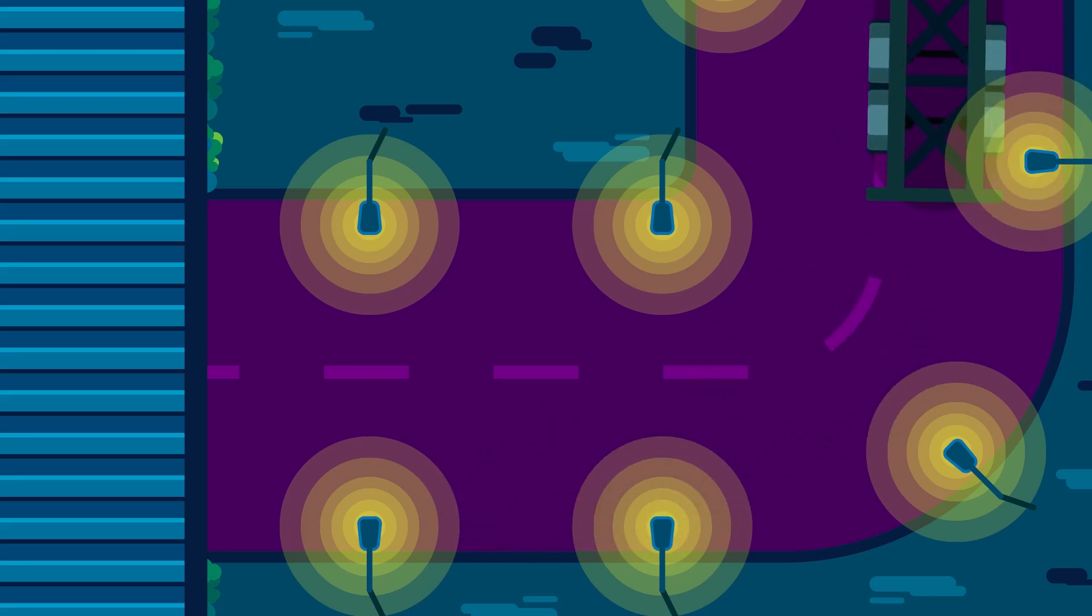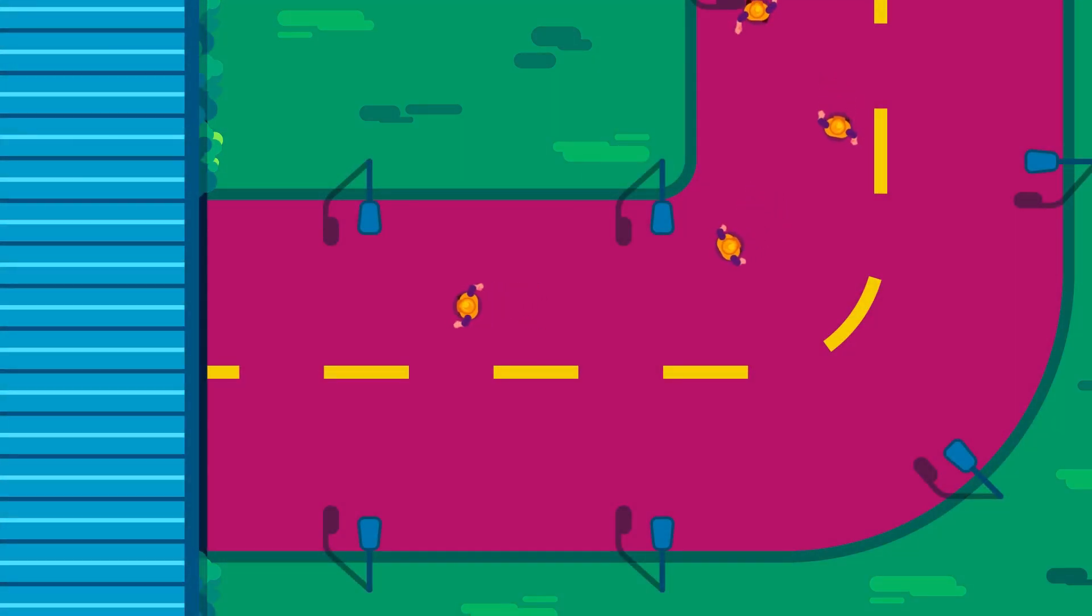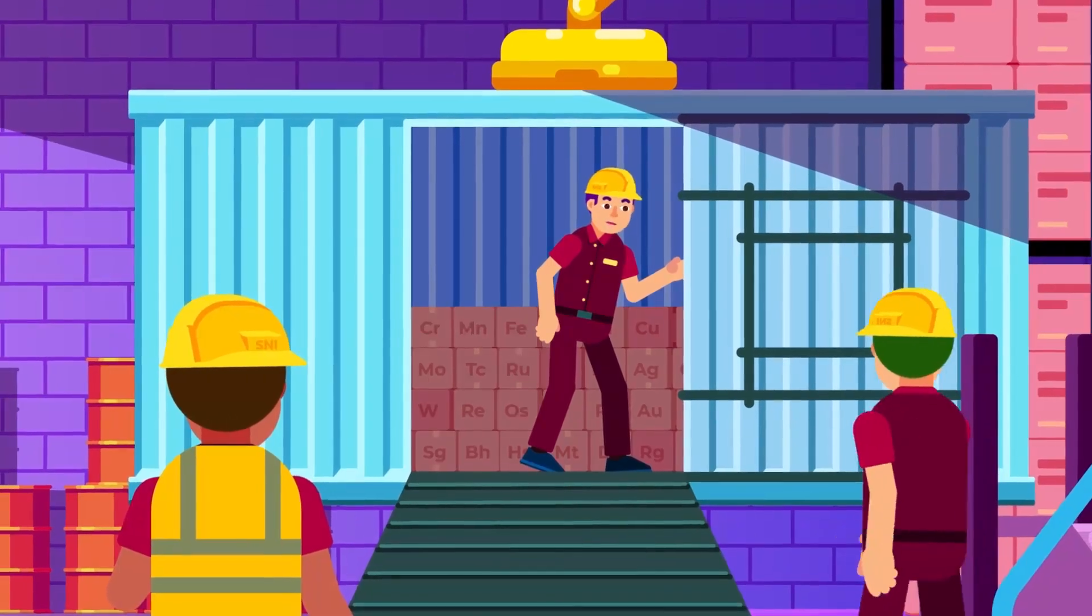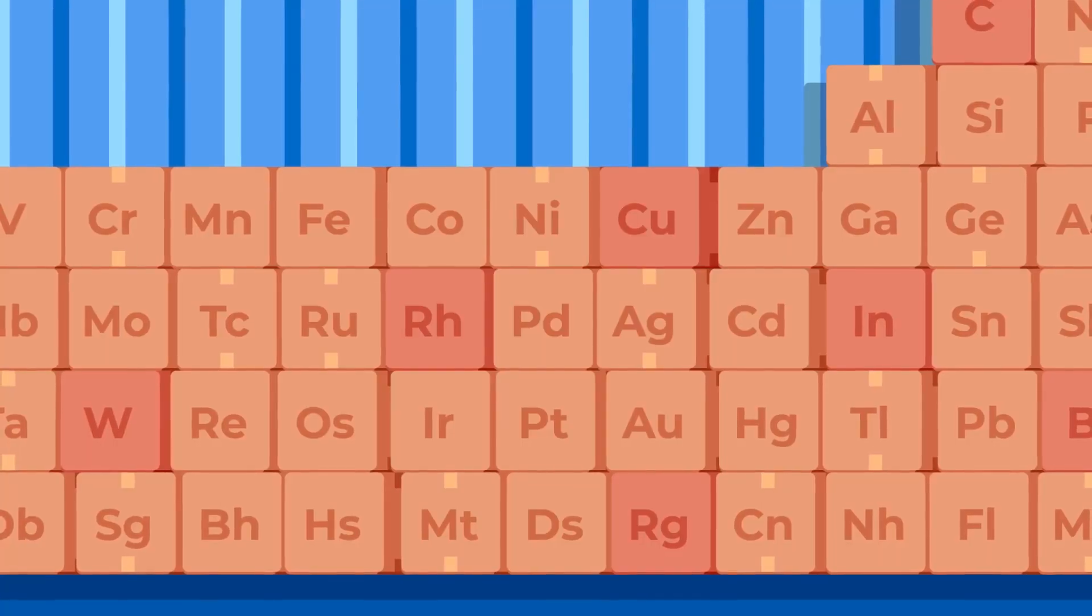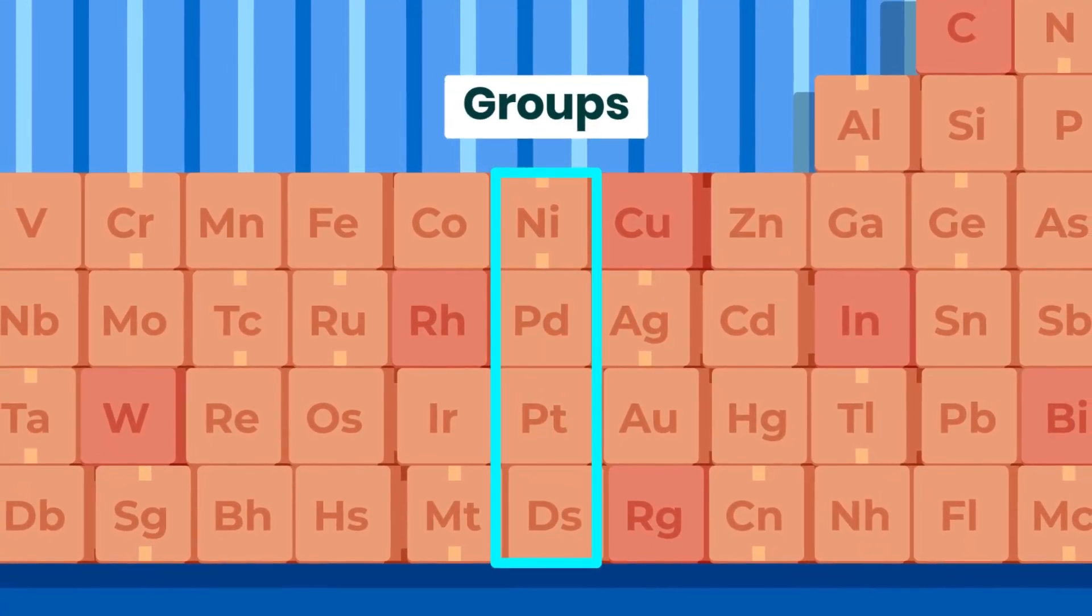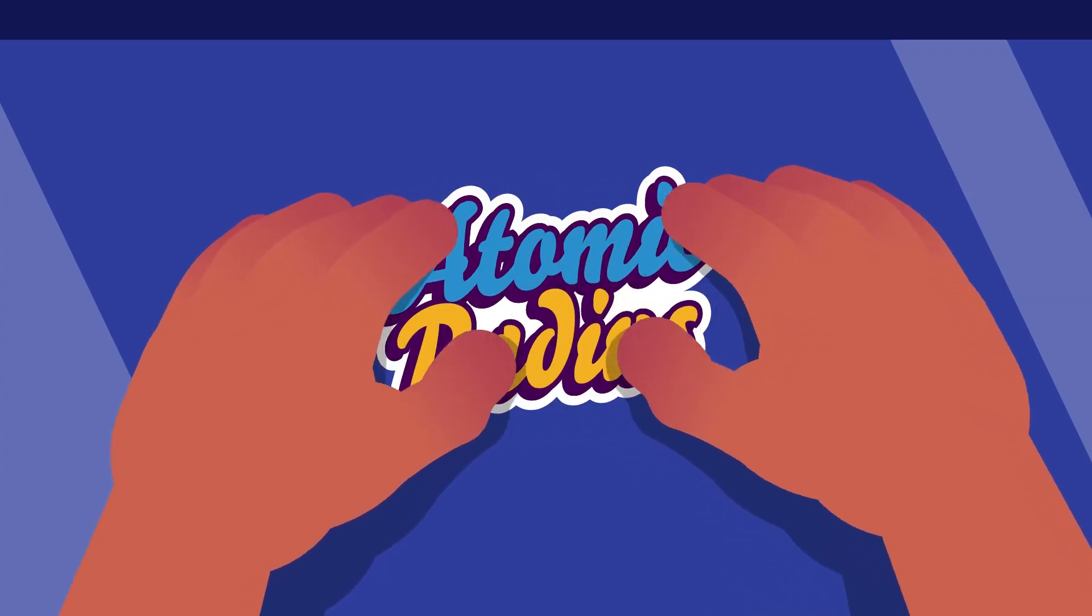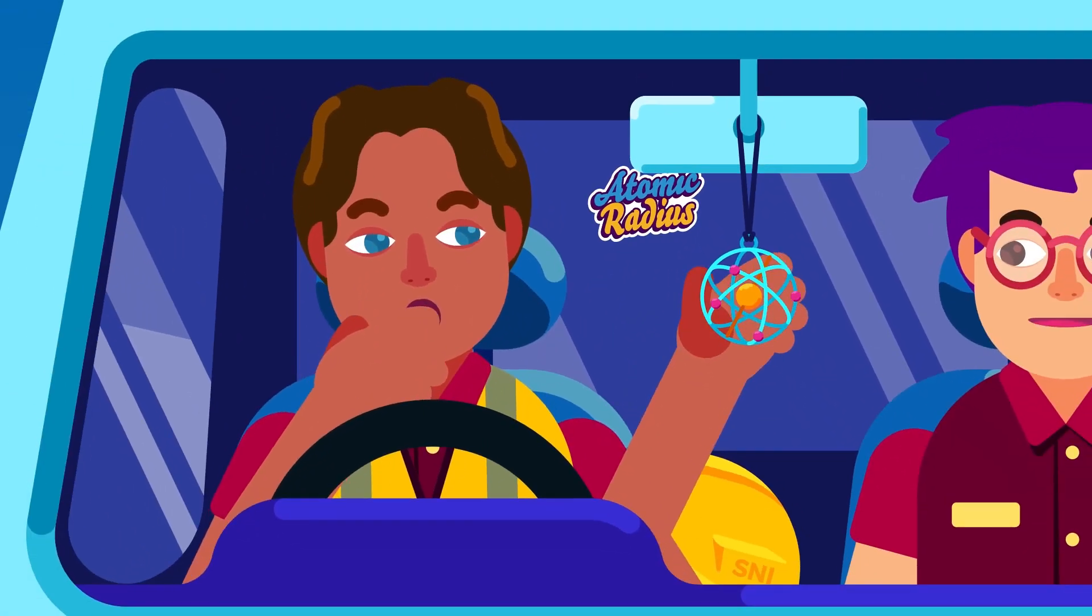We're going to continue our explanation from the rows or periods of the periodic table discussed in the previous video to the columns or groups of the periodic table. The periodic table arranges elements into groups with similar properties. One of the most important ones is atomic radius.